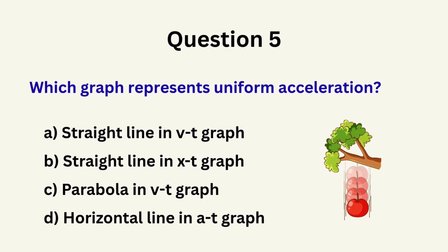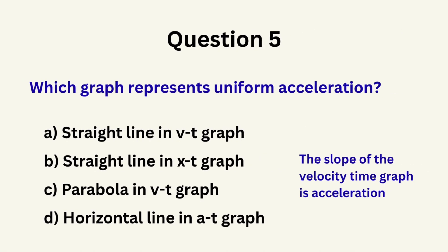Question 5: Which graph represents uniform acceleration? A. Straight line in velocity-time graph, B. Straight line in position-time graph, C. Parabola in velocity-time graph, D. Horizontal line in acceleration-time graph. The correct answer is A: straight line in velocity-time graph.